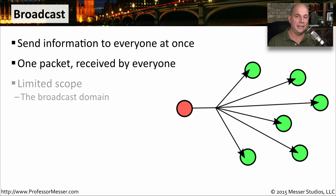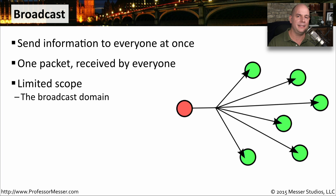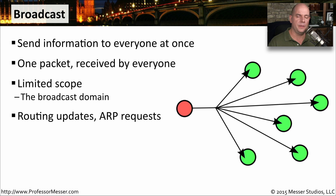Fortunately, broadcasts have a limited scope. Your broadcasts are only going to go as far as your local subnet — these broadcasts do not hop through routers. So you can't send one broadcast to everybody in the world; it will only reach all of the devices on your local subnet. We commonly see this used for utility purposes: when routers need to update each other, they send broadcasts, or if a device needs to perform an ARP request, it sends that request to everyone on the subnet using a broadcast.